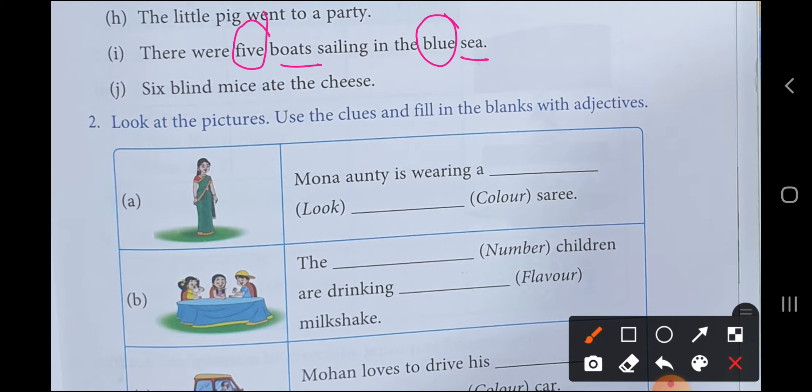Six blind mice ate the cheese. Do you know what mice is? Mouse, the plural of mouse is mice. Cheese - cheese is a thing that mouse likes to eat. So two nouns we got. And how many mice are there? Six blind, so six blind mice ate the cheese. These are your adjectives.